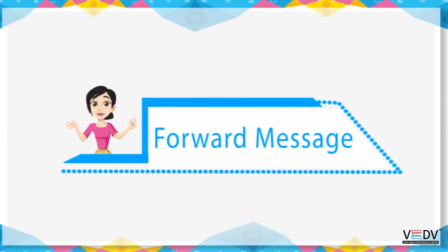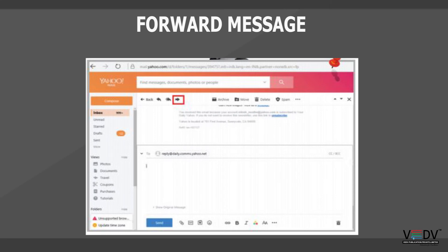Forward a Message: If you receive a message and want to forward it to another person, follow these steps: open the required message in Inbox, click on the Forward option, enter the address of the person you want to forward the message to, and click the Send button.